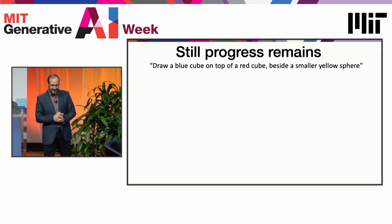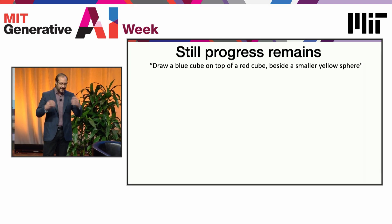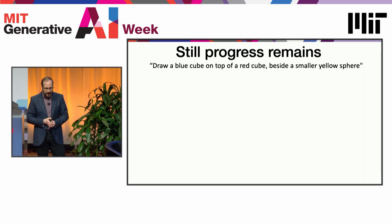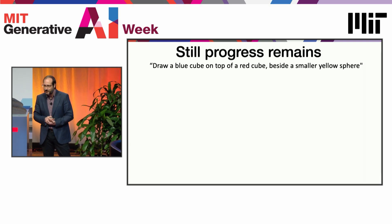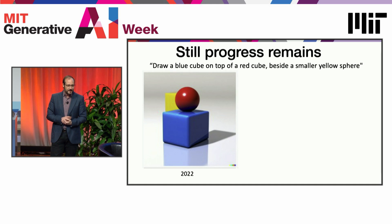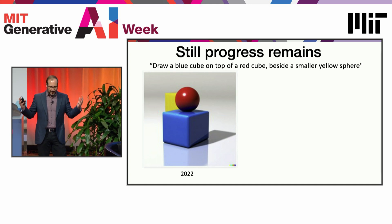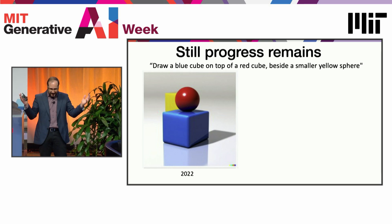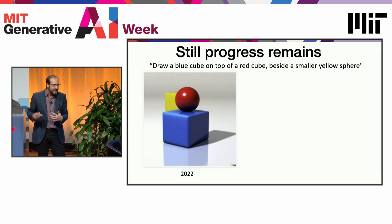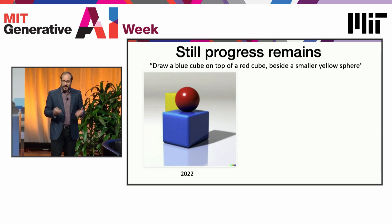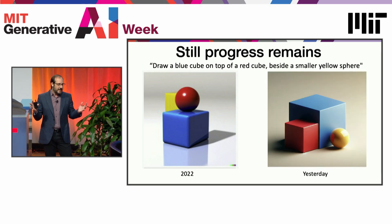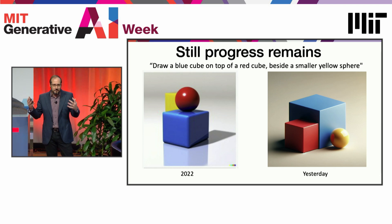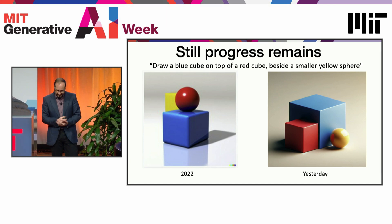A lot of progress still remains. If you go to an application like DALL-E or ChatGPT with visual modules and ask it to draw a blue cube on top of a red cube beside a smaller yellow sphere, a year ago the result was completely wrong — not a blue cube on a red cube, the ordering all wrong, just a mess. I just did that a couple of days ago and it's still not good. It renders things that look like what I had in mind, but the configuration is all wrong. These models still have a long way to go.